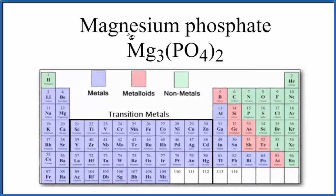In this video, we'll look at whether magnesium phosphate, that's Mg3(PO4)2, is ionic or covalent.